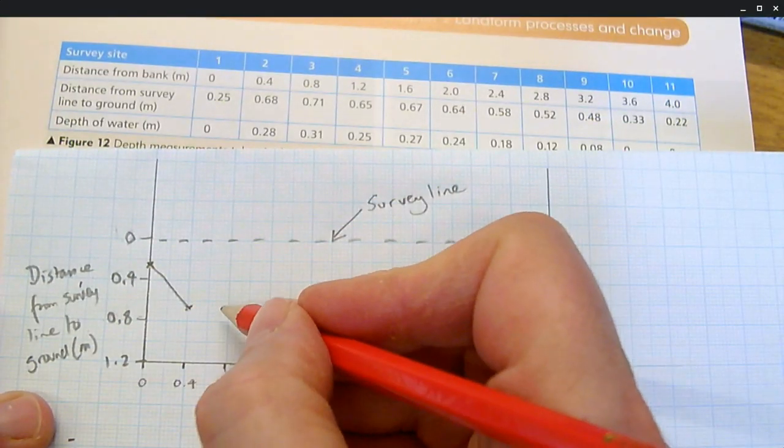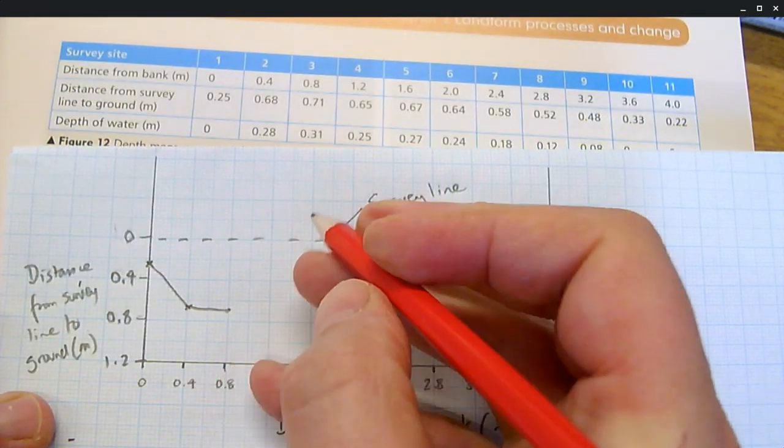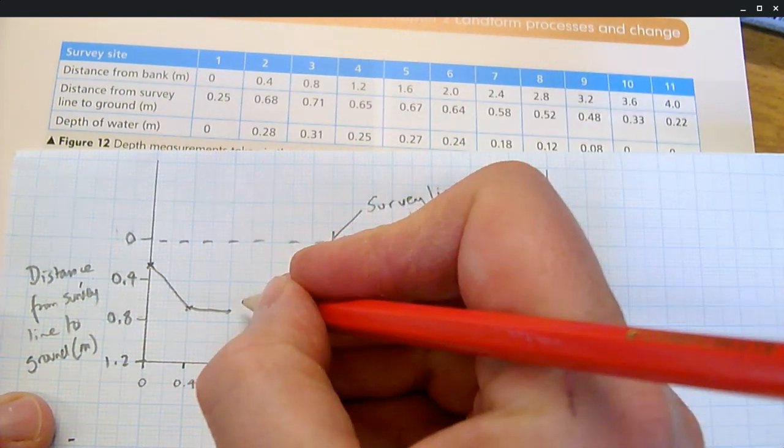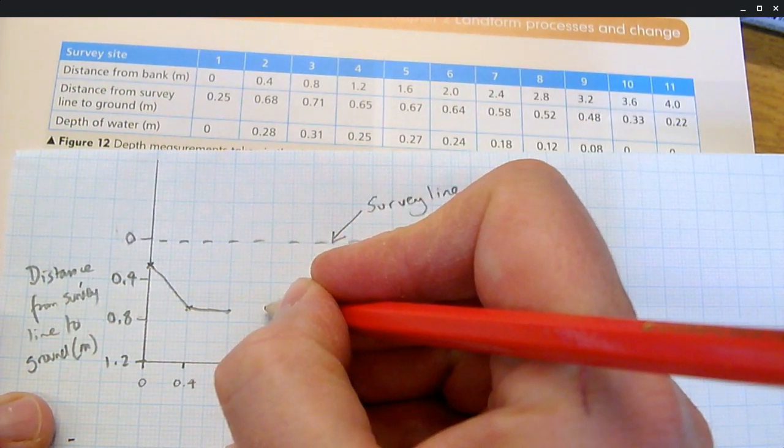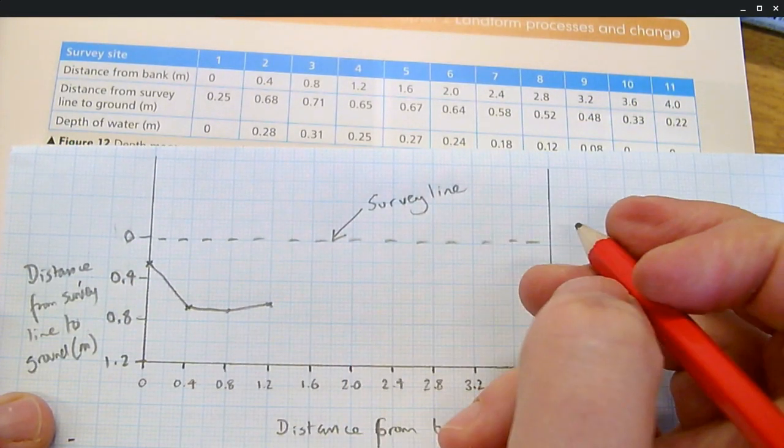At 0.8, we go down just a tiny bit. And we're building up our cross-section over time. At 1.2 metres across, we're at 65. So that's gone up a little bit. So we're going to put that there. And we're building our cross-section across the river.